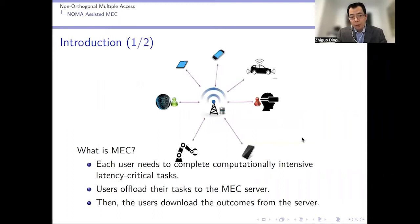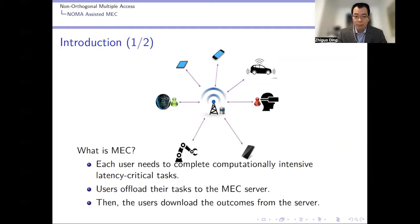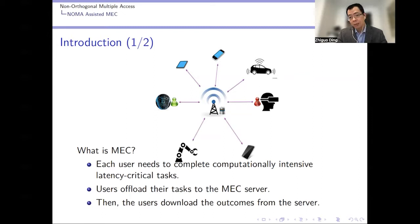For mobile edge computing, or MEC, the key idea is the following. Let's say we have multiple users and one base station. Each user wants to compute some computationally intensive and latency-critical task. For many reasons — for example, a sensor device cannot carry out deep learning tasks locally — MEC offers the opportunity for each user to send their task to the base station. This is called offloading. The base station has an MEC server which will compute the task for the user, and then the user can download the result.